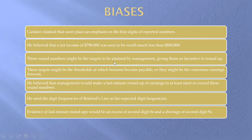These round numbers, such as $800,000, might be targets to be attained by management, might be thresholds for bonuses, or might be a consensus earnings forecast. He believed that if the numbers came in just below one of these nice round number thresholds, management would make a little last-minute rounding up. He used the frequencies of Benford's Law — even though in his paper he didn't call it Benford's Law — as the expected digit frequencies for net income numbers. He believed that evidence of the last-minute roundup would be an excess of second-digit zeros and a shortage of second-digit nines.